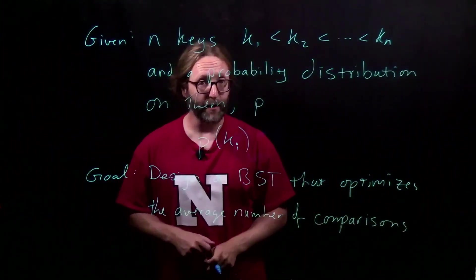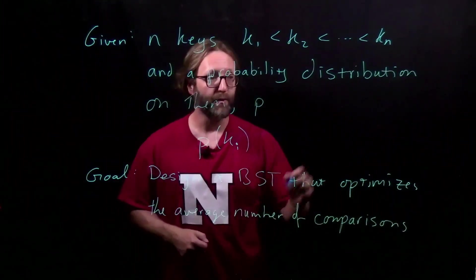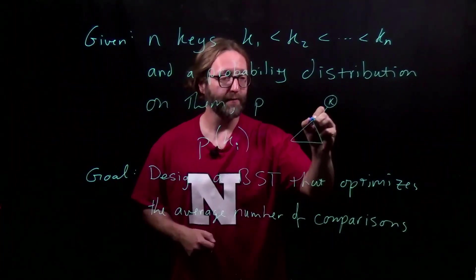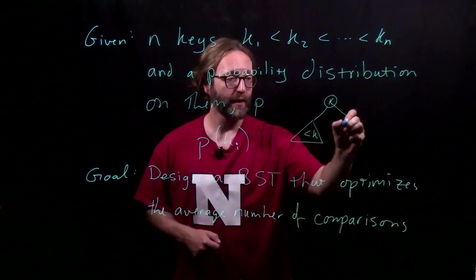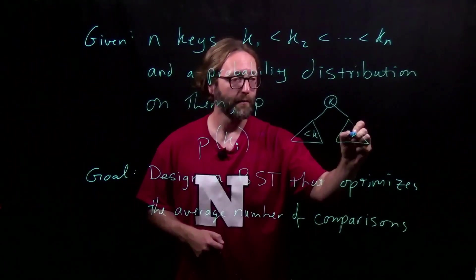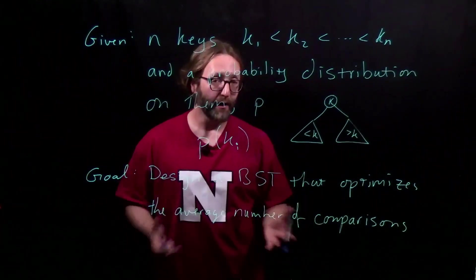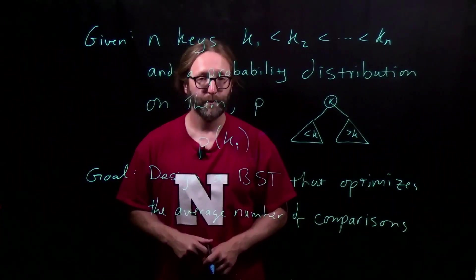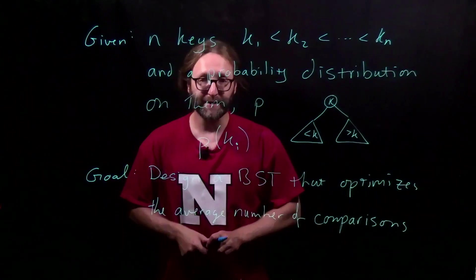Our goal will be to design a binary search tree, so it's still going to have the binary search tree property, that if you have a key k, everything in the left subtree is less, and everything in the right subtree is greater. But instead of a balanced tree, our goal will be to minimize the average number of comparisons. To understand that, let's look at an example.